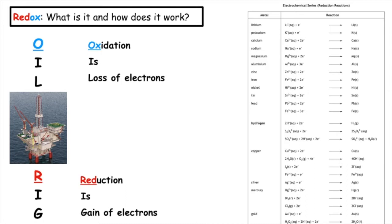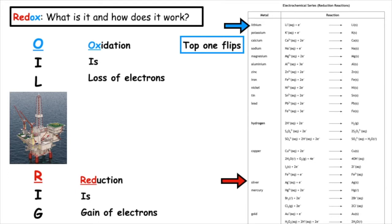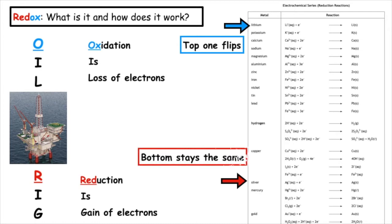When we're given two different metals that have different positions in the electrochemical series, we identify those on page 10. The top equation will always flip, so we write it in the reverse of what is given on page 10 — that is known as oxidation. The bottom one will always stay the same, so we copy it directly from the data booklet — that is known as a reduction. Remember: for an oxidation, the electrons will be found on the product side, and for a reduction, the electrons will be found on the reactant side.